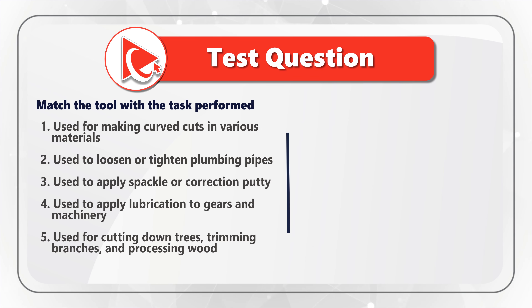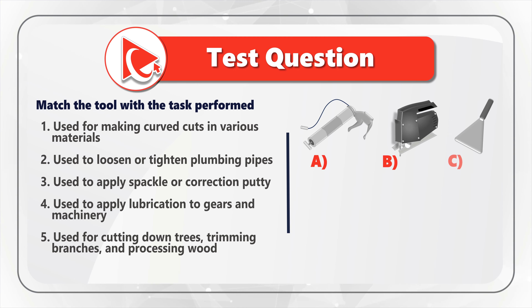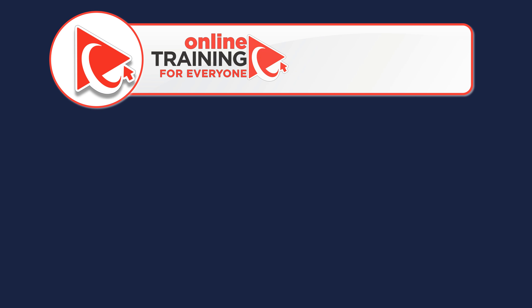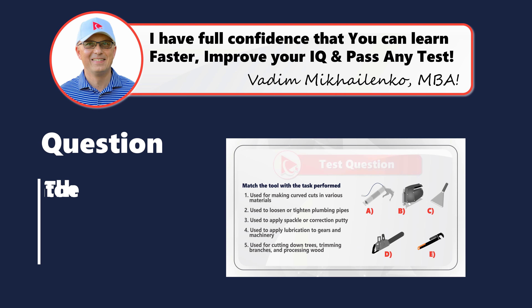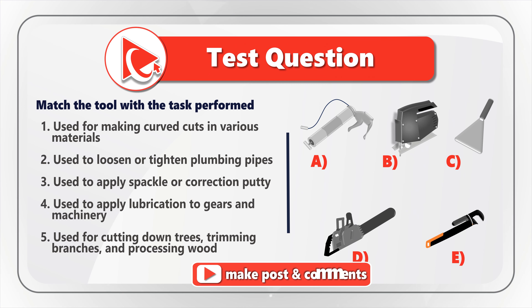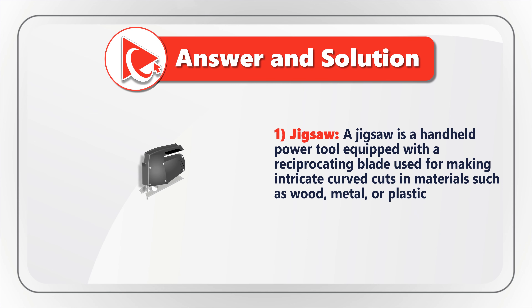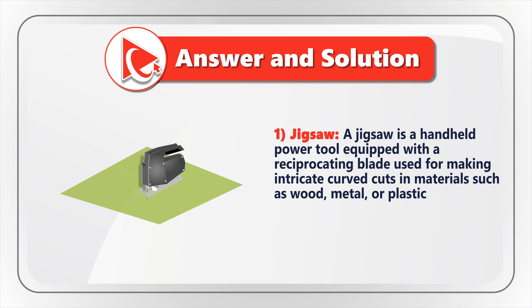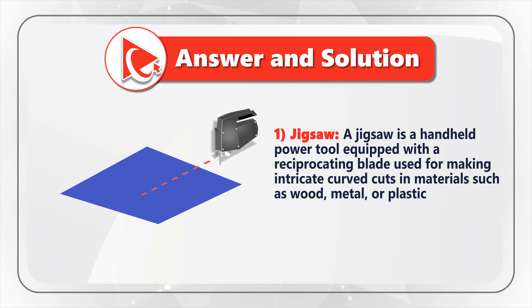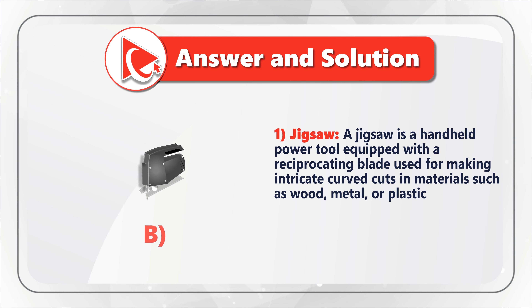You need to match these descriptions with choices A, B, C, D, and E. Let's start with choice one. I believe the description for choice one is a jigsaw. A jigsaw is a handheld power tool equipped with a reciprocating blade used for making intricate curved cuts in materials such as wood, metal, or plastic. Description one matches image B.